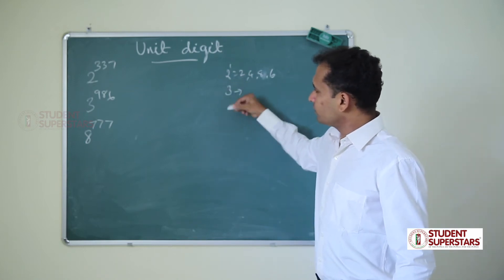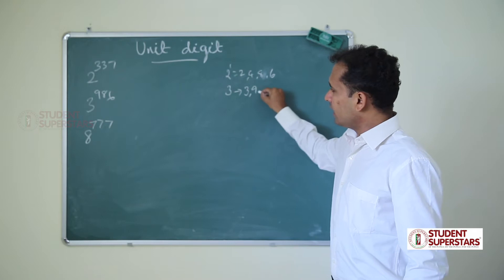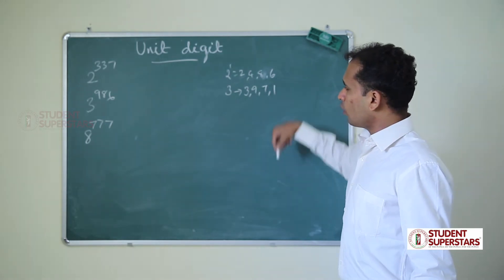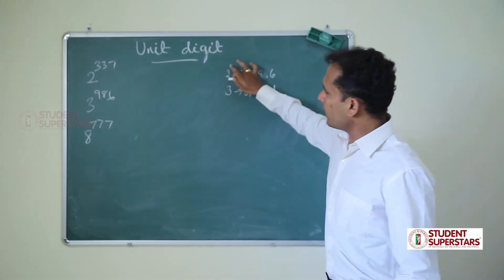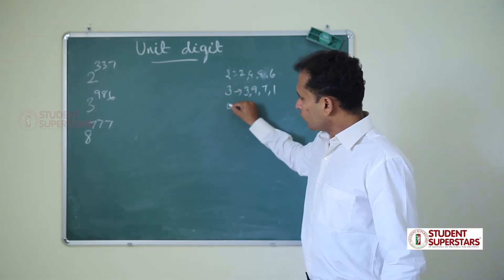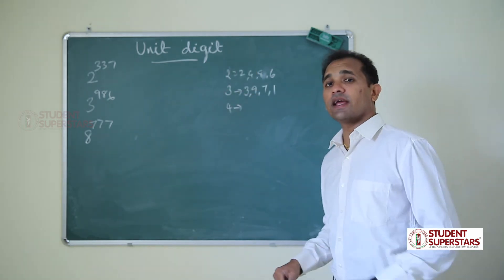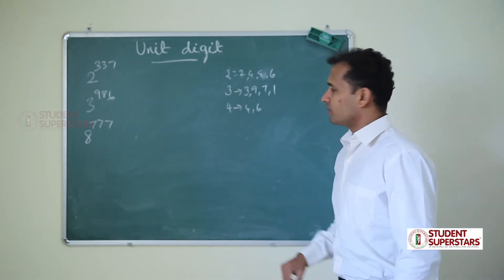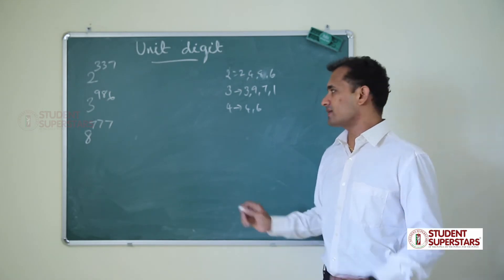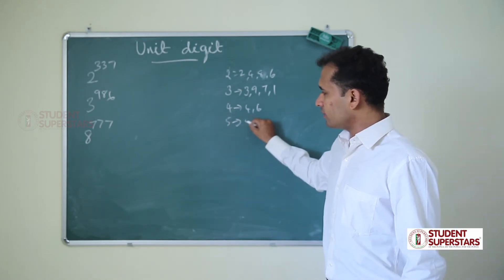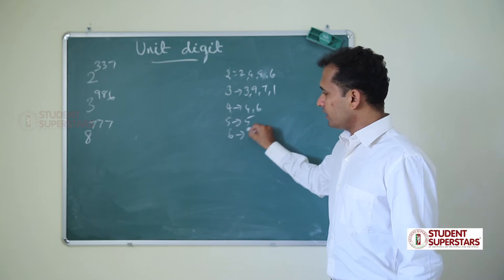Then for 3: 3, 9, 7, 1. Again 3, 9, 7. Power cycle of 4. Next, 4 has a power cycle of 2 where 4 and 6 comes. 4 for any odd number is 4, for even number is 6. 5 power anything is 5. 6 power anything is 6.